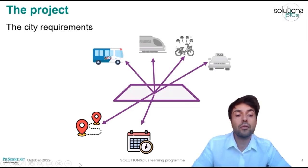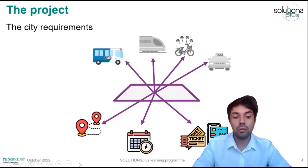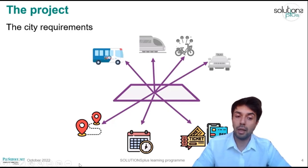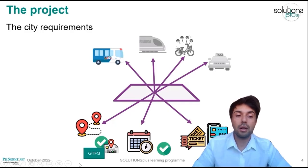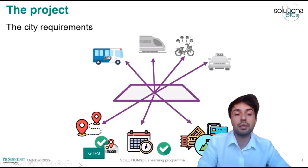The most important functionality — and what this course is about — is the integration of the payment gateway. This means the app will be able to show options to buy tickets, validate tickets, and activate them. While informability needs were largely met using GTFS data, purchasing tickets requires a more challenging integration of data and stakeholders.